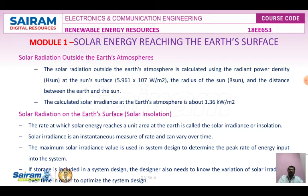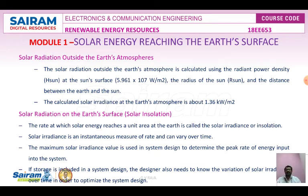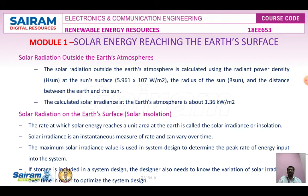The maximum solar irradiance value is used in system design to determine the peak rate of energy input. If storage is included in the system design, the designer also considers how much irradiance accumulates over time. Solar radiation reaching the Earth's surface may be defined in various terms: beam radiation (direct solar radiation), diffuse radiation, global radiation, and air mass.